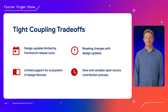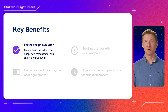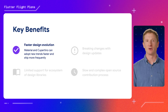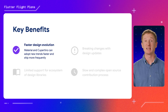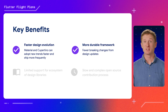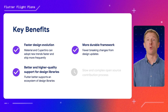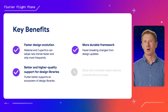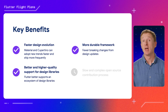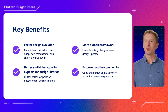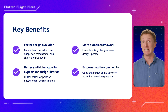So that sounds like a lot of work — let me tell you about the reward. Breaking out these libraries will enable faster design evolution. Both the Material and Cupertino libraries will be able to adopt new design trends and ship updates much faster once they're no longer tied to Flutter releases. The framework will also be more durable as we'll see fewer breaking changes caused by design updates. Flutter itself will better support a wider range of third-party design libraries, since design library authors can use raw widgets from the widgets library rather than building on top of opinionated Material widgets. Decoupling will also empower the Flutter community to contribute to Material and Cupertino without having to worry about how their contribution could become a regression in the framework.